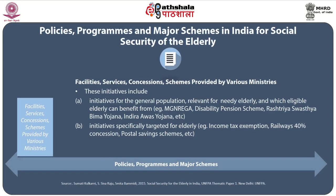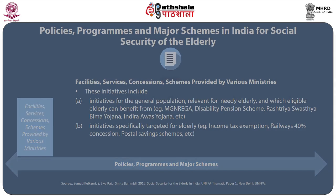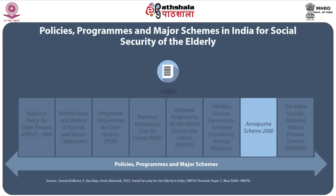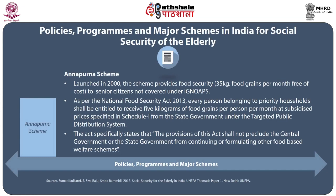These include initiatives for the general population that are relevant for the needy elderly, such as NREGA, Disability Pension Schemes, Rashtriya Swasthya Bima Yojana, Indira Awas Yojana, etc. There are also initiatives specifically targeted at the elderly, such as income tax exemption, railway concessions, postal savings schemes, etc. As part of food security, the Annapurna scheme, launched in 2000, provides 35 kilos of food grains per month free of cost to senior citizens not covered under IGNOAPS.